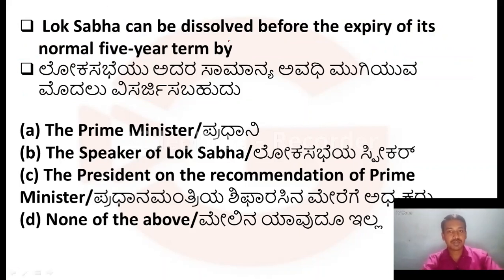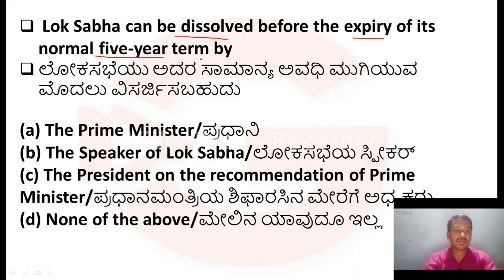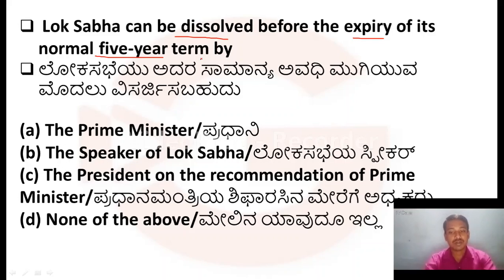Lok Sabha can be dissolved before the expiry of its normal five-year term. The normal term of Lok Sabha is five years, but sometimes it can be dissolved. By whom? Option A: Prime Minister. Option B: Speaker of Lok Sabha. Option C: The President on the recommendation of the Prime Minister. Option D: None of the above.